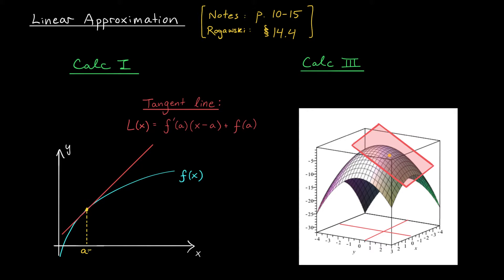Suppose, for example, that a is equal to 1, and at that point the function is nicely behaved and finding the equation of the tangent line isn't too hard. But the truth is, we're not interested in the value of our function at 1 — we're interested in the value of our function over here, at 1.3. It could be the case that plugging 1.3 into the function leads to a really gross calculation, something we just don't want to do. So maybe we're willing to settle for an approximation. Since the tangent line is still pretty close to the function at 1.3, we can approximate the function's value using the value of the tangent line. So f(1.3) is approximately equal to L(1.3), and that's much easier to calculate.